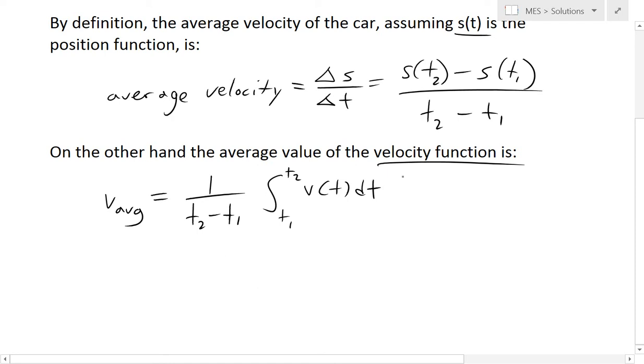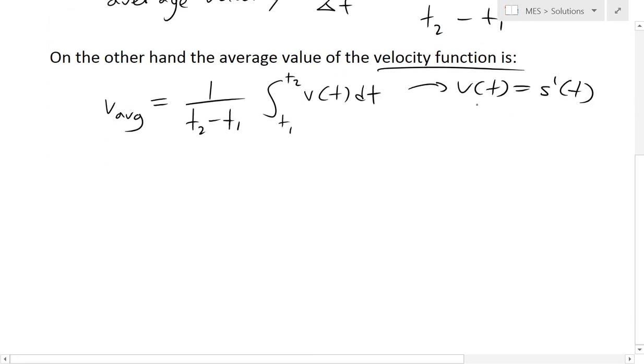Now v(t), or the velocity, is just equal to the derivative of the position function, so s'(t). So that's what velocity is by definition. It's basically the rate of change of the position. So now we can put that in here.